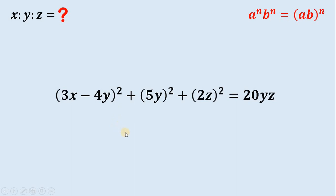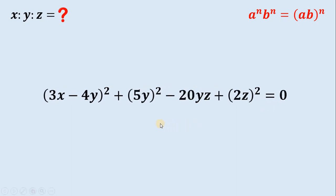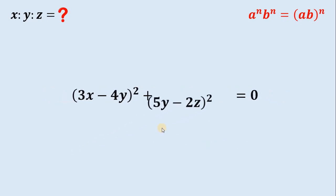We will do the same thing for the remaining three terms, subtracting 20yz on both sides. The expansion of 5y minus 2z quantity squared gives us 5y quantity squared minus 2 times 5y times 2z plus 2z quantity squared, which gives negative 20yz. This is exactly the remaining expression, so we can replace it with 5y minus 2z quantity squared.